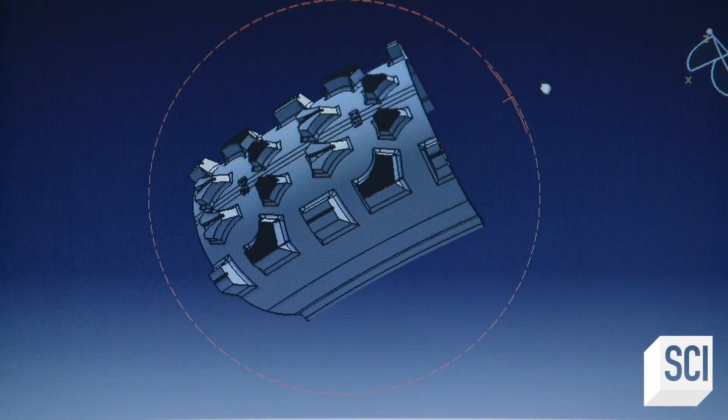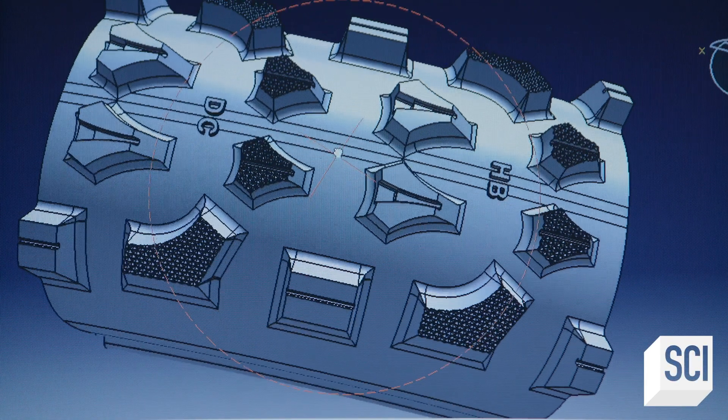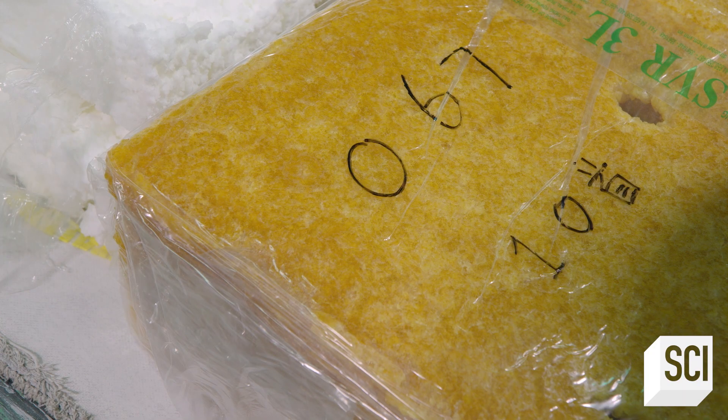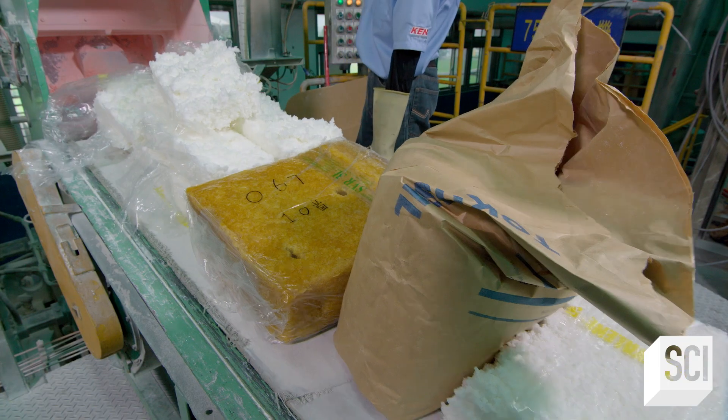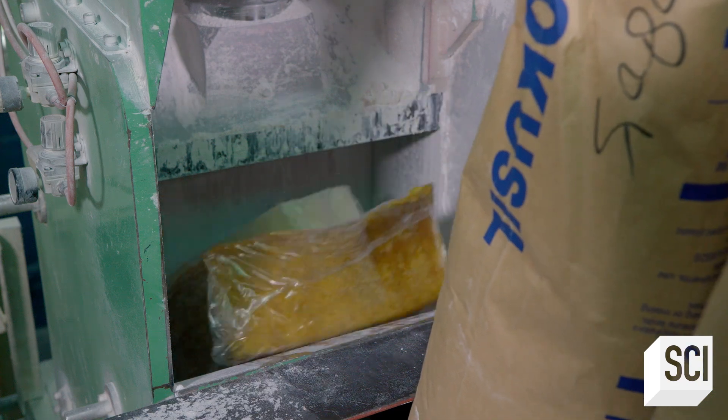First, designers use a computer model of a tire to simulate the effects of different rubber compounds. Construction begins with rubber compounds being mixed together to create parts of the tire. Ingredients include synthetic and natural rubbers, sulfur, and other chemicals.